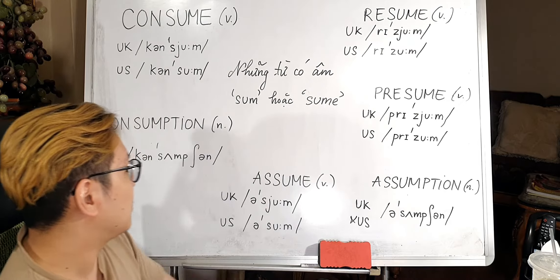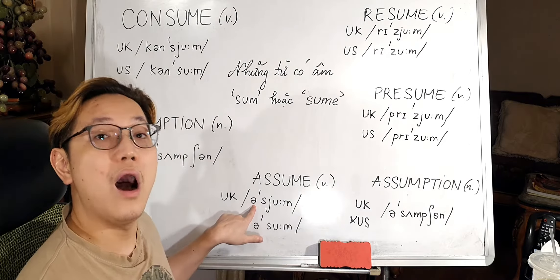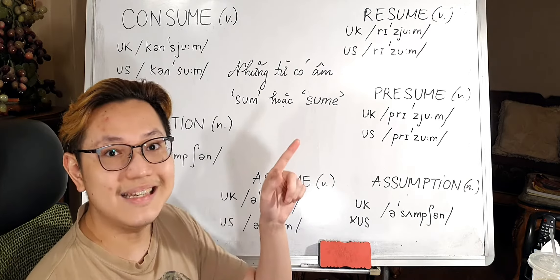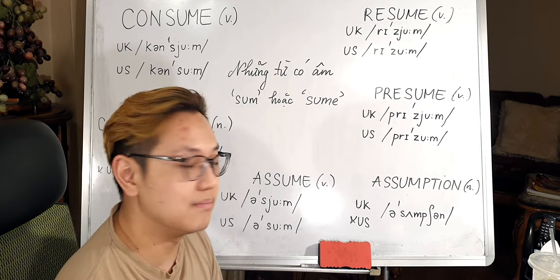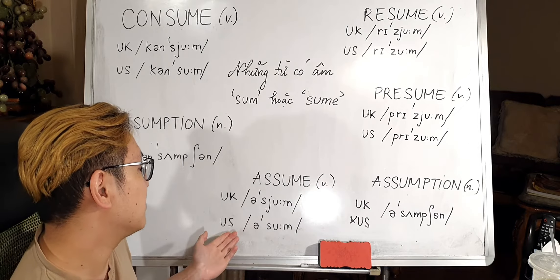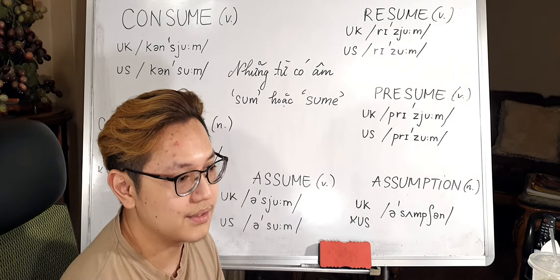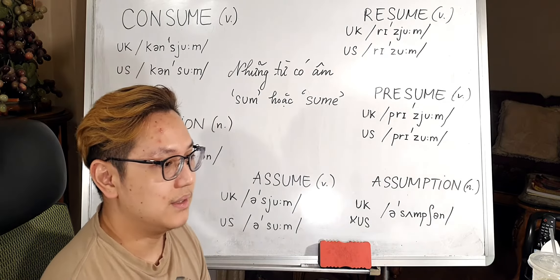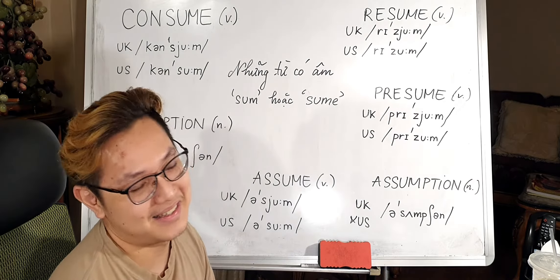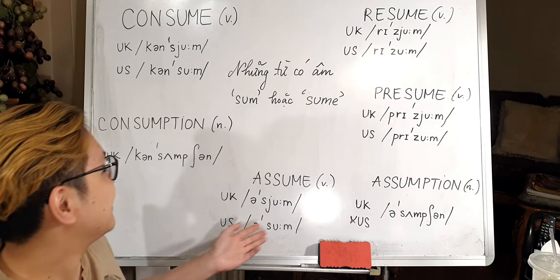So first: assume — A, A, A. Assume. Assume. The US way, they eliminate the J: 'assume', 'I assume'. And UK: 'assume' — it sounds a bit more fancy, isn't it? UK nghe có vẻ fancy, sang hơn. Anyway.